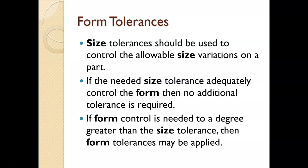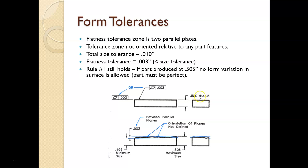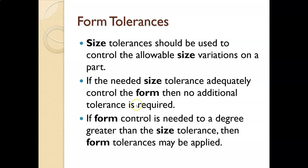Size tolerances should be used to control the allowable size variation on the part. If the needed size tolerance adequately controls the form, then no additional tolerances are required. Don't throw on geometric dimensioning and tolerancing just because you can or because it looks good. If the plus-or-minus five thou is acceptable for flatness, then that's it — don't add anything. If form control is needed to a degree greater than the size tolerance, then form tolerances may be applied.